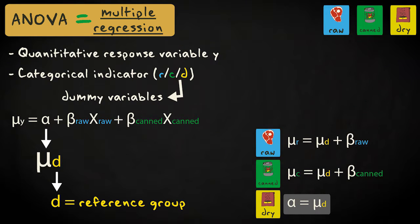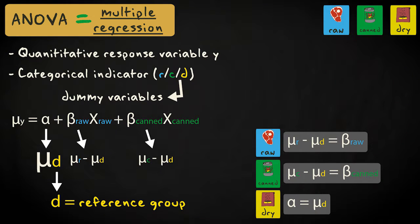From this it follows that the regression coefficient beta sub raw represents the difference in the population mean of the raw group minus the population mean of the dry food group. Beta sub canned represents the difference in the population mean of the canned food group minus the population mean of the dry food group.